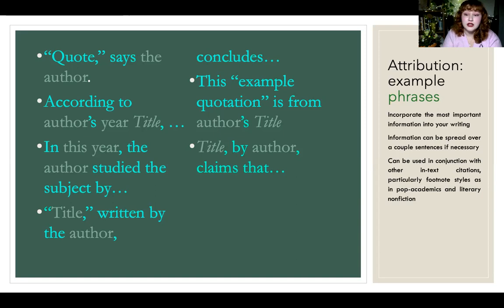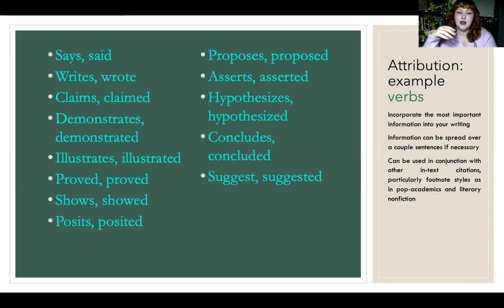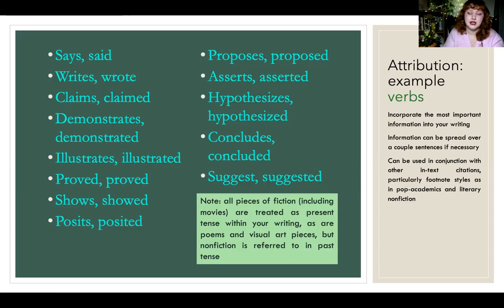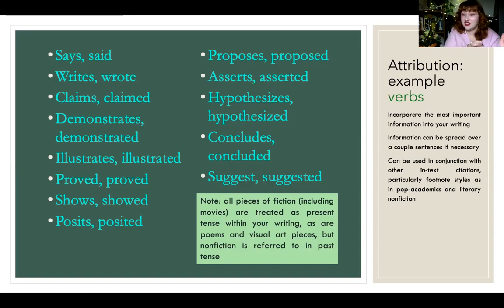That's an attribution — the style you see in journalism, where they just tell you what the source is within the paragraph. Here are some example verbs: a lot of these are synonymous with 'says' or 'shows.' Quick note on fiction: if you're writing about fiction — movies, stories, plays, poetry, or visual art — those are referred to in present tense because the idea is that the art exists perpetually. Whereas if you're referring to nonfiction and research sources, those are referred to in past tense because they are completed. Past tense for nonfiction, present for fiction and art pieces.